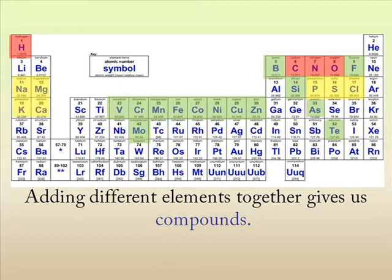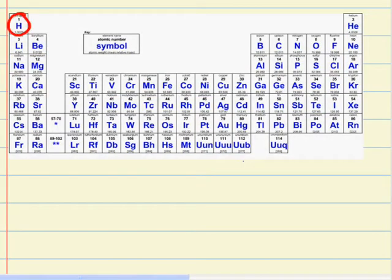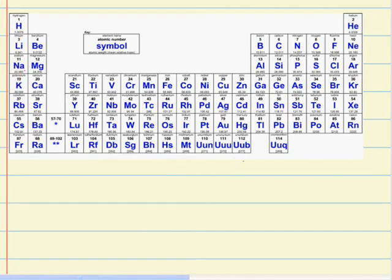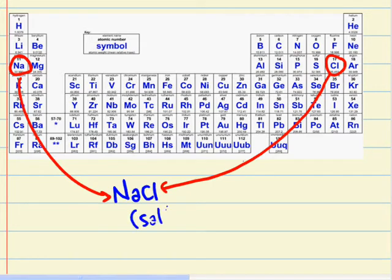Now by adding different elements together, you get these things called compounds. An example of this, say we add hydrogen and oxygen together, well, we get water. Say we add a bit of sodium and a bit of chlorine together, well, we get NaCl which is salt.